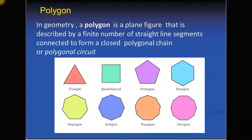You can count the sides of this polygon: line segment number one, two, three, four, five, six, seven, eight, and nine. A nonagon is a polygon in which there are nine line segments connected to form a closed polygonal chain or polygonal circuit. Another type is the decagon — a polygon in which there are ten line segments connected to form a closed polygonal chain, with sides one through ten.